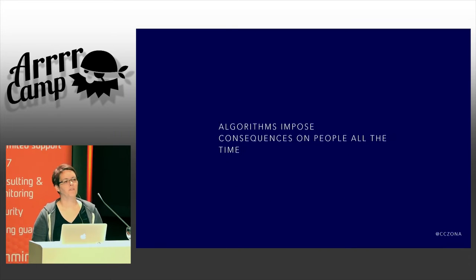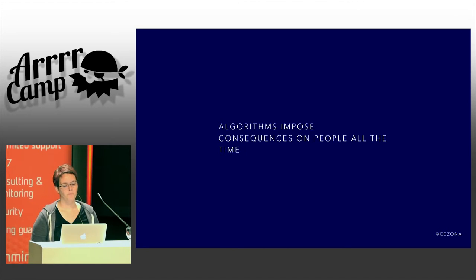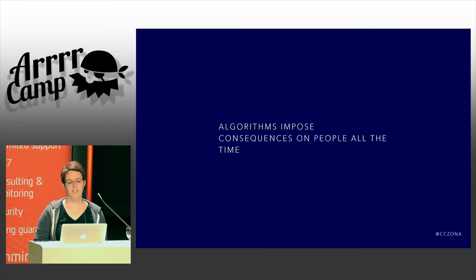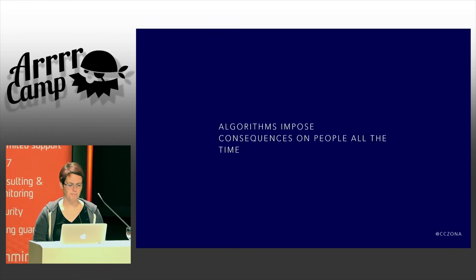Algorithms impose consequences on people all the time. We are able to extract remarkably precise insights about an individual, but the question is: do we have a right to know what they didn't consent to share with us, even when they willingly share the data that leads us there? And we have the question of how to mitigate against unintended consequences of that.